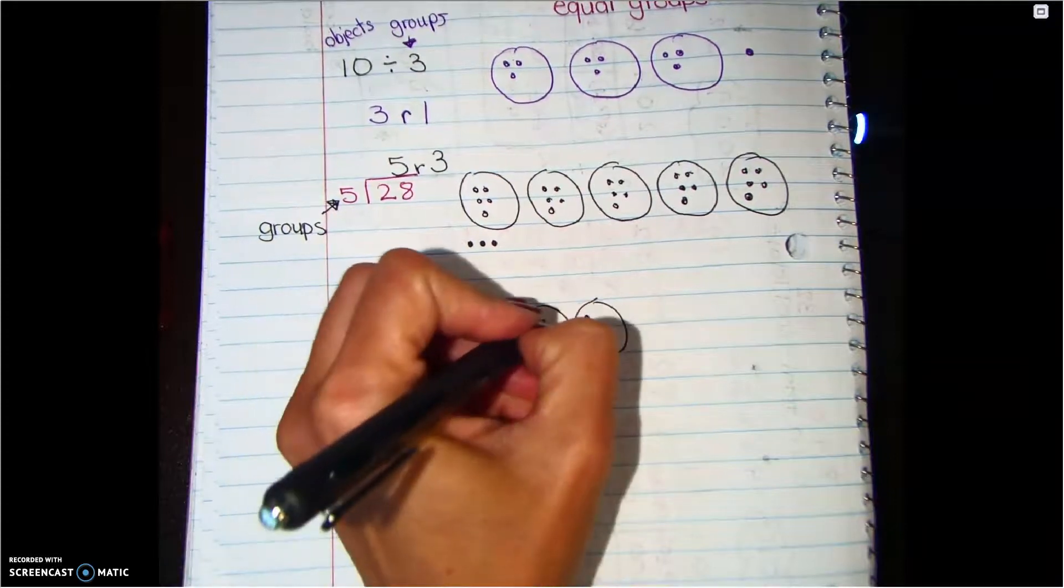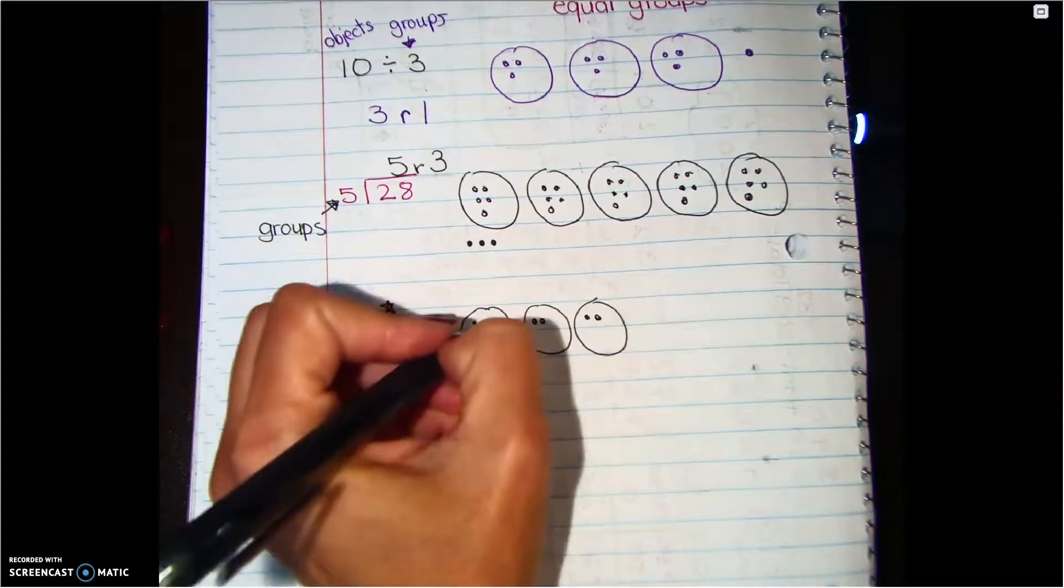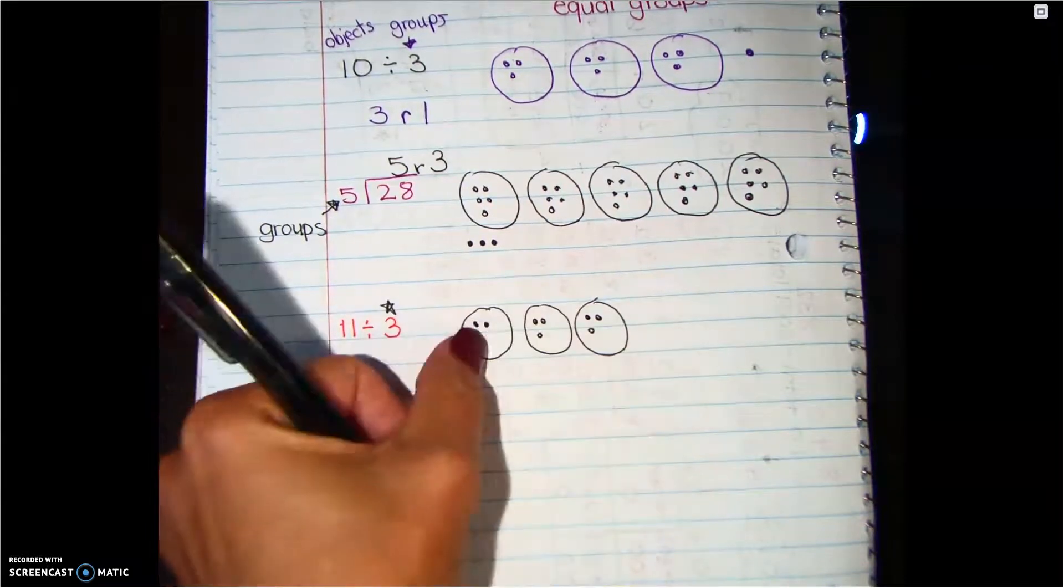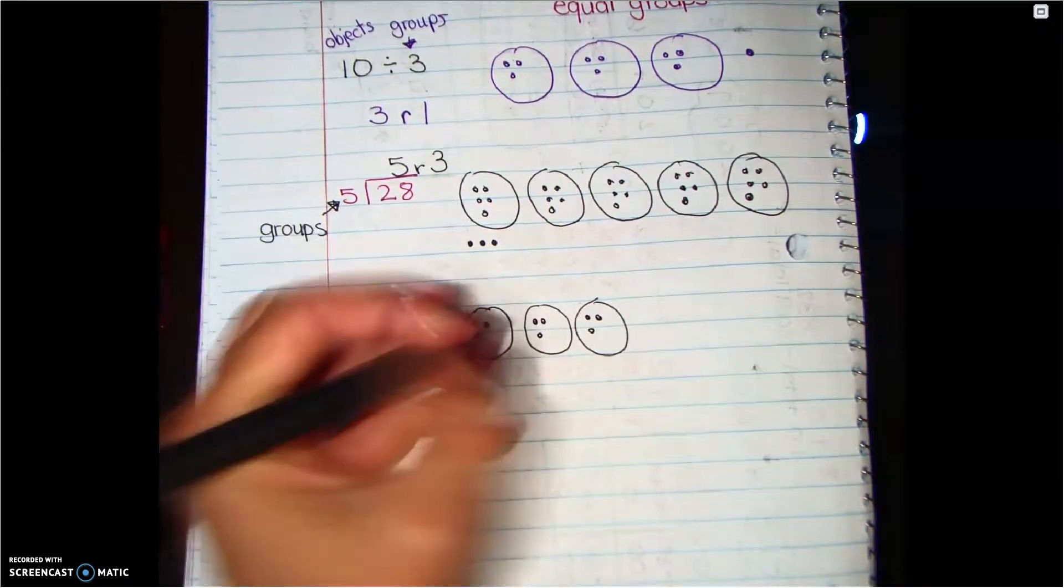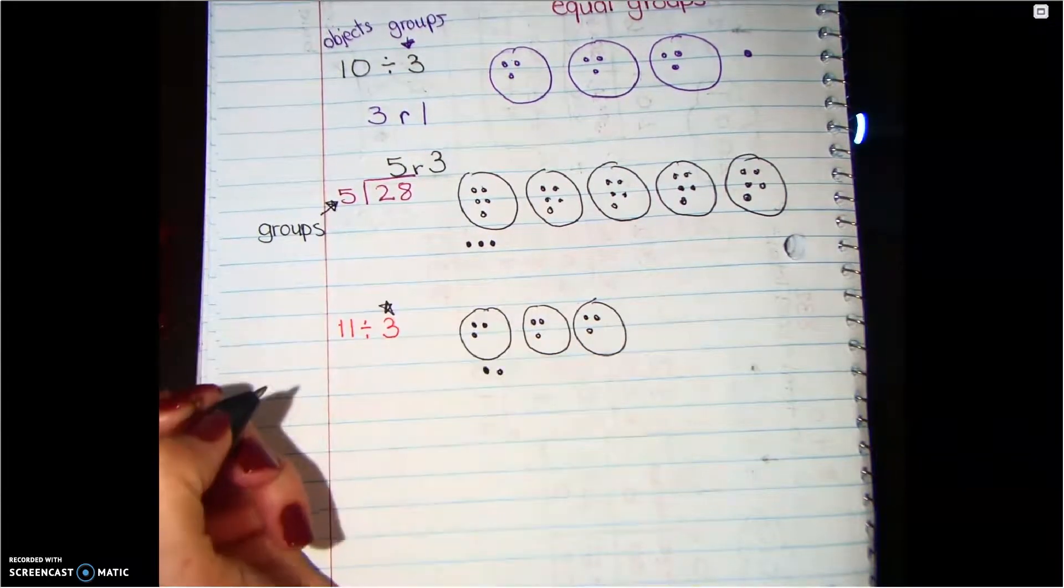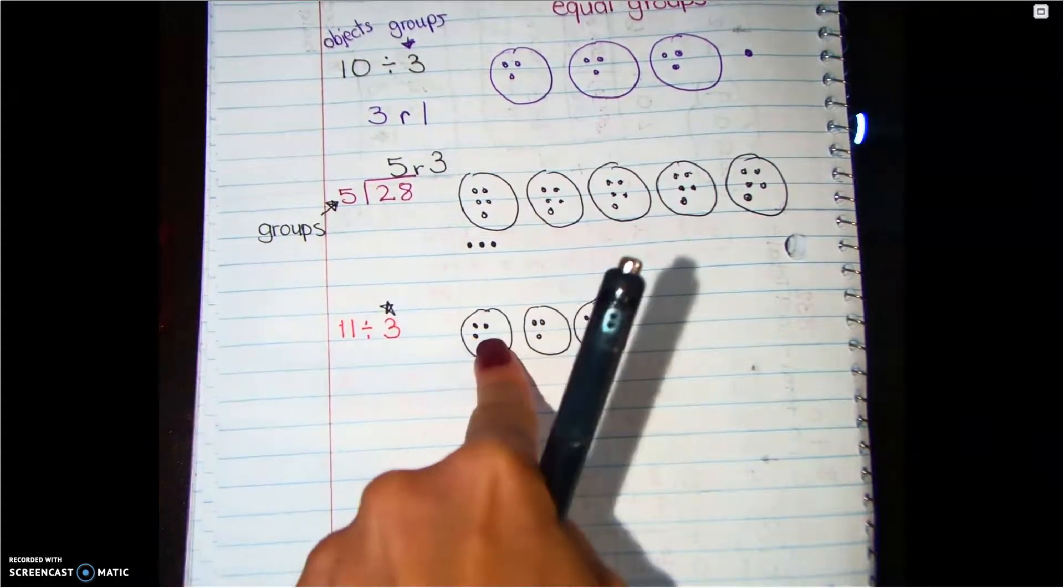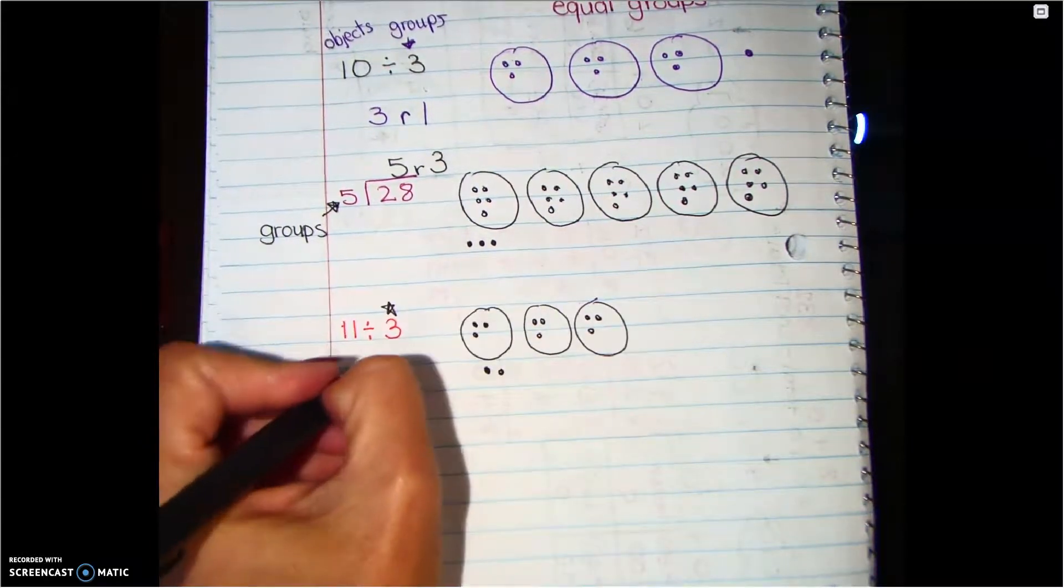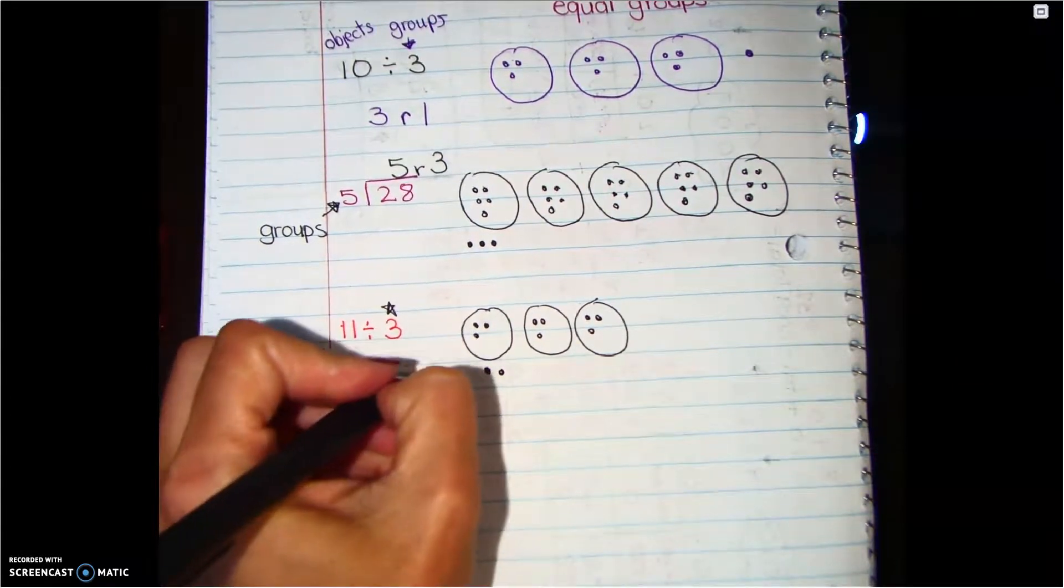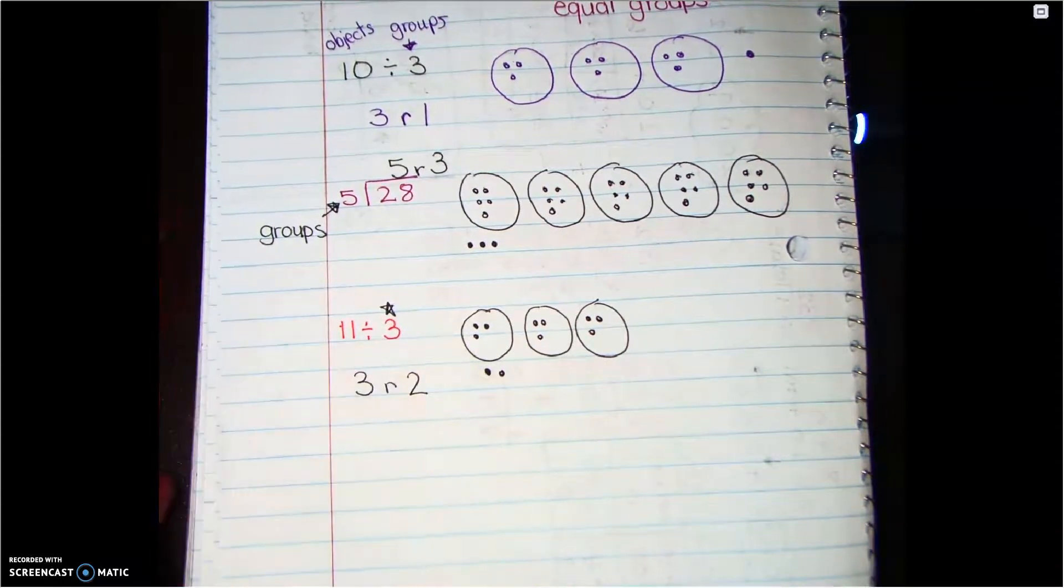So I don't have enough, so that's going to be ten. Eleven has to go out there. So then my answer to this one is how many is in each group? Three. And what's our remainder? Two. That's what's left over. So this part is how many ends up in each group.